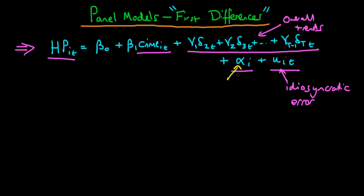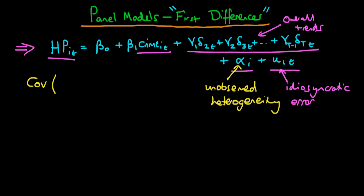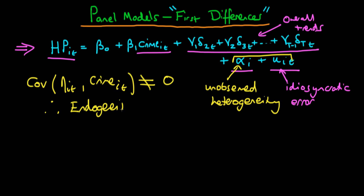We spoke about the problems with this regression because of the unobserved heterogeneity term, which contains things that don't vary across time but do vary across i. This caused the covariance of our composite error — the sum of these two terms — with the independent variable crime rate to be not equal to zero, creating an endogeneity problem. If we were to estimate the regression via pooled OLS, we know it would be both biased and, more importantly, inconsistent.